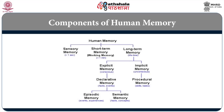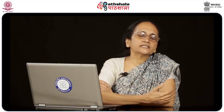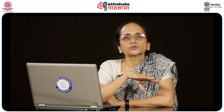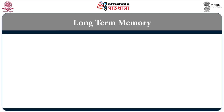The long-term memory has two major components: explicit memory and implicit memory. Declarative memory concerns facts and events, and has two aspects — episodic and semantic. In semantic dementia, patients lose semantic memory, which is all about facts concerning concepts. Semantic dementia affects the semantic memory component of declarative memory, which is part of long-term memory.